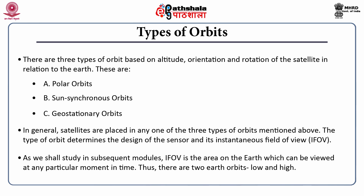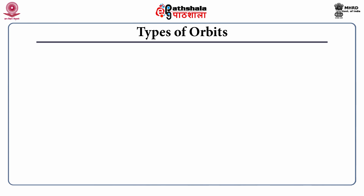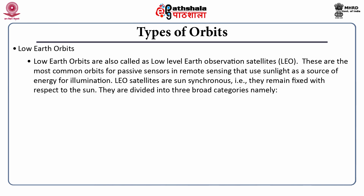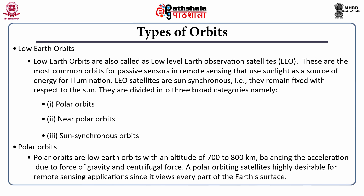There are two Earth orbits: low and high Earth orbits. Coming to the low Earth orbits, they are also called as low level Earth observation satellites or LEO. These are the most common orbits for passive sensors in remote sensing that use sunlight as a source of energy for illumination. These low elevation satellites are sun synchronous, that is they remain fixed with respect to the sun. They are divided into three broad categories: polar orbits, near polar orbits, and sun synchronous orbits. Polar orbits are low Earth orbits with an altitude of 700 to 800 kilometers, balancing the acceleration due to the force of gravity and the centrifugal force.